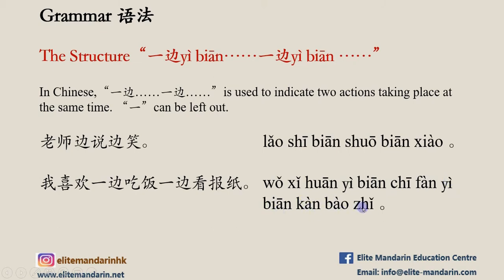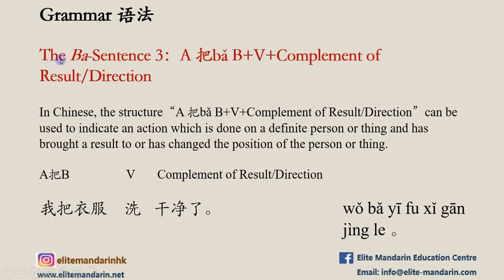Another example: 我喜欢一边吃饭，一边看报纸。 吃饭 means 'eat food,' 报纸 means 'newspaper.' The sentence means: 'I like eating while reading the newspaper.' Next topic: the 把 sentence, part three.